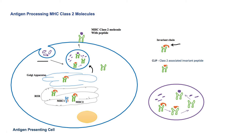In the endosome, an acidic environment and proteolytic enzymes degrade part of the invariant chain, and the remaining part is called CLIP. CLIP still covers the peptide binding site of HLA class 2 molecules. CLIP is then displaced from its position by another molecule called HLA-DM, which also helps in peptide loading on HLA class 2 molecules.